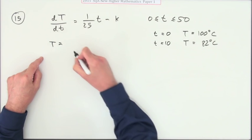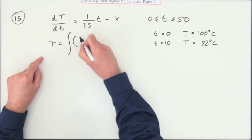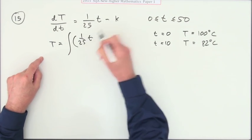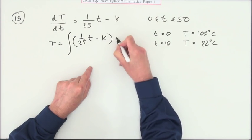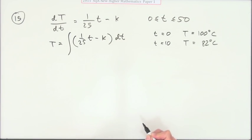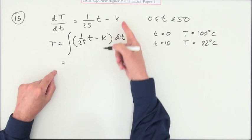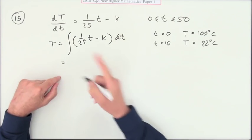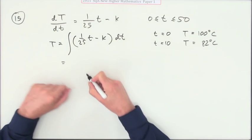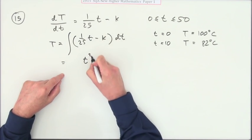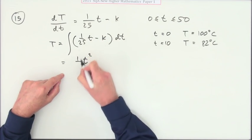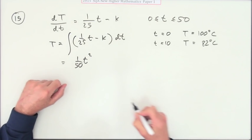Notice you've got k which is an unknown, but when you integrate you're going to get another one. So t goes up to squared, divide by that, so that'll make that a 50 underneath, minus k will go back up to t, a linear term.